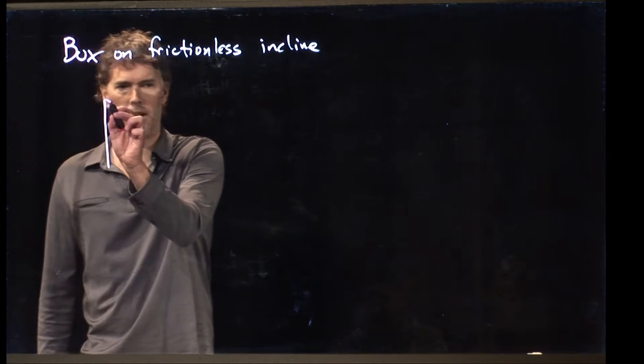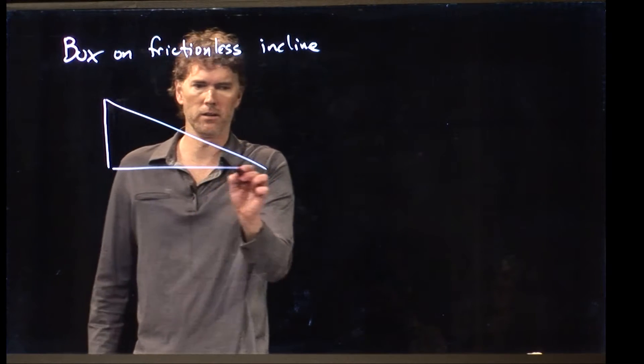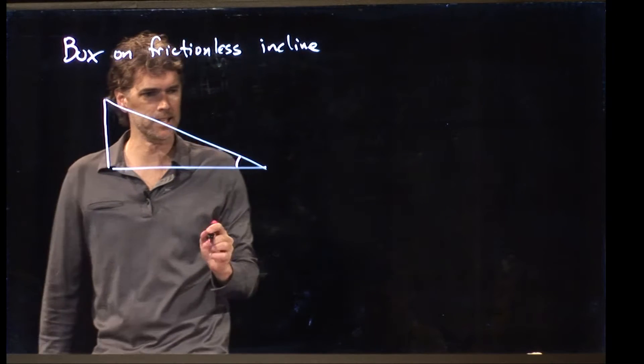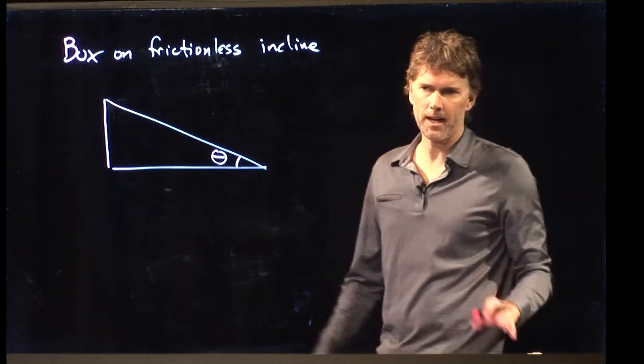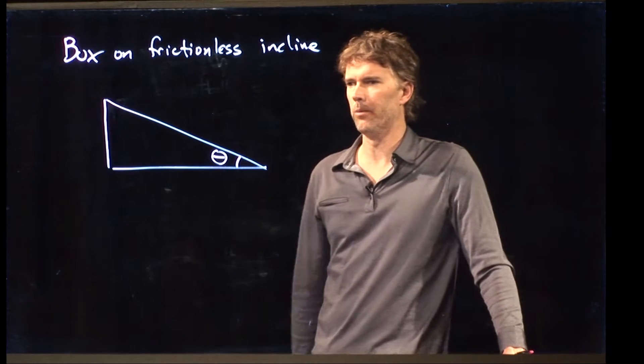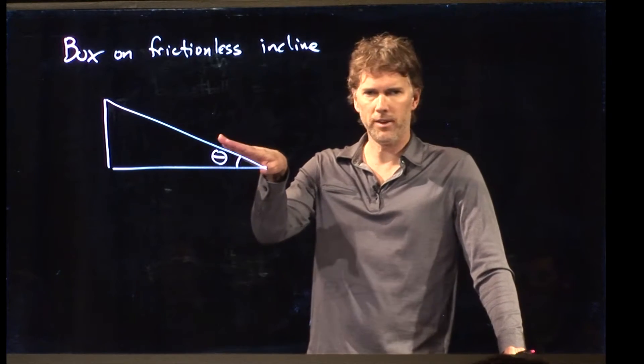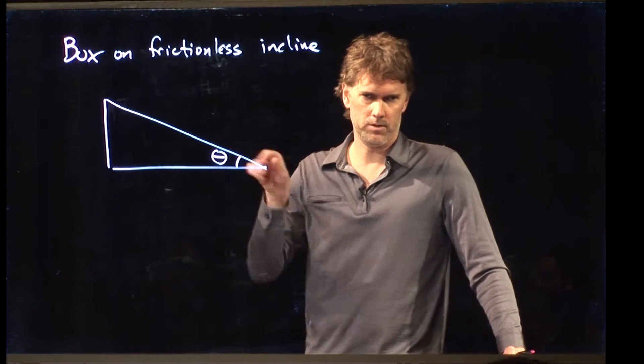So what does an incline look like? An incline looks like a triangle. This is how we always draw inclines, and we always reference that angle right there. Not always, but 95% of the time that's the angle that we give you. What is the angle of the incline relative to the horizontal?